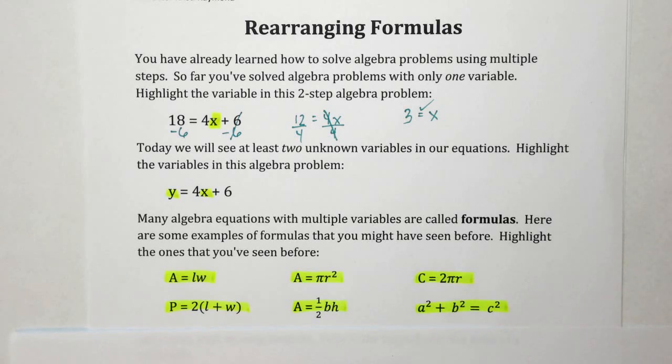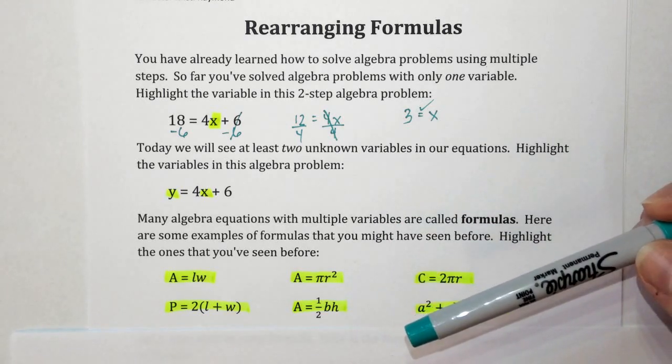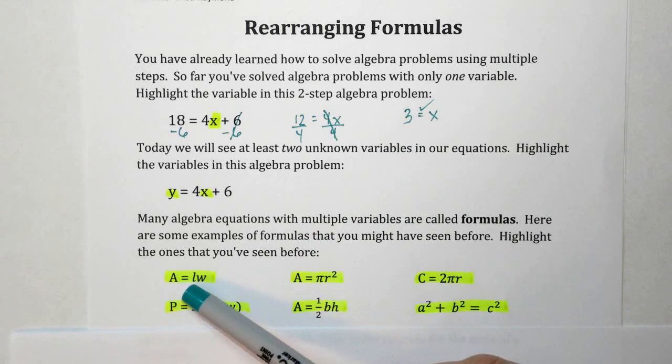You don't have to understand all of those. Just know that you have at least two unknown variables in each of these problems. For example, in the first one you have A, L, and W.